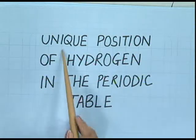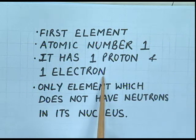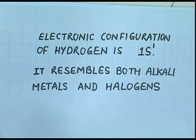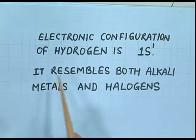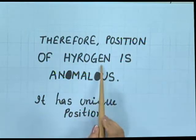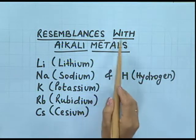Why is its position unique in the periodic table? We will discuss that in some of its properties, it resembles the alkali metals and it also resembles the halogens, but at the same time it differs from alkali metals as well as from the halogens. It is the first element, its atomic number is one. It has one proton and one electron and it is the only element which does not have neutrons in its nucleus. Its electronic configuration is 1s1. It resembles both alkali metals and halogens. Therefore, the position of hydrogen is anomalous — it has a unique position with resemblances to alkali metals.